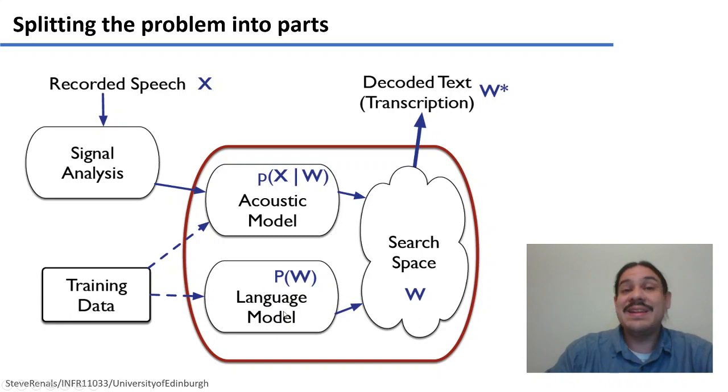The system would also train a language model like the n-grams we studied on week four, so that it could figure out the probability of certain sequences of words, so that it could know that the sequence 'recognized speech' is probably very frequent in our data, but the sequence 'recognized beach' is probably very infrequent in our data.